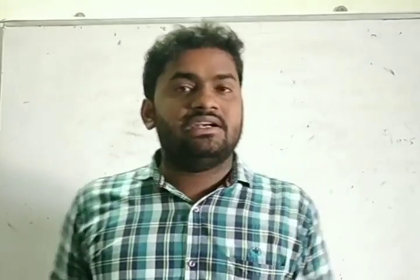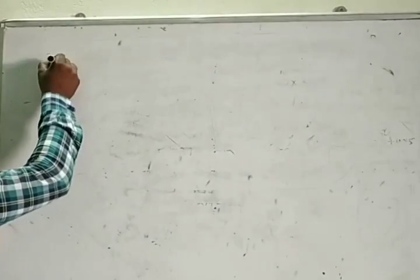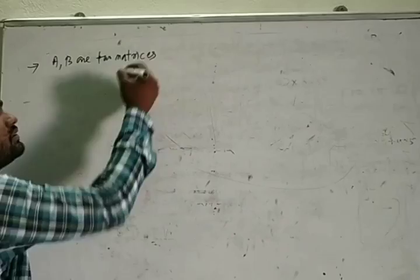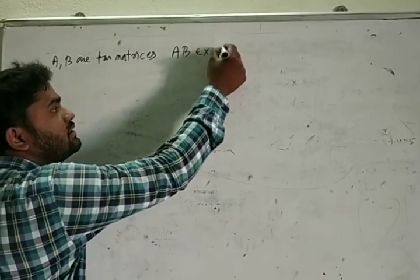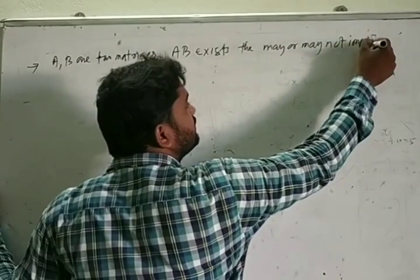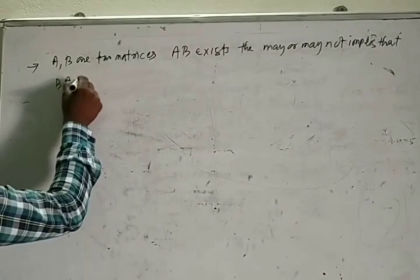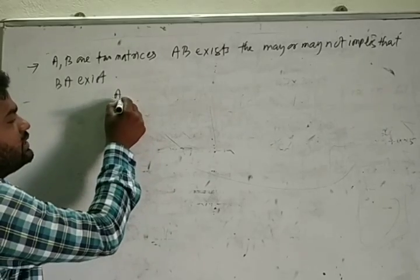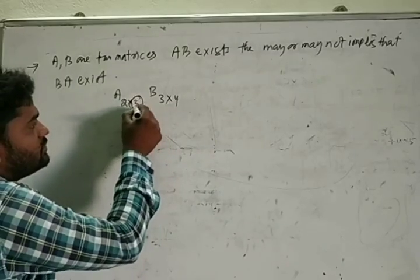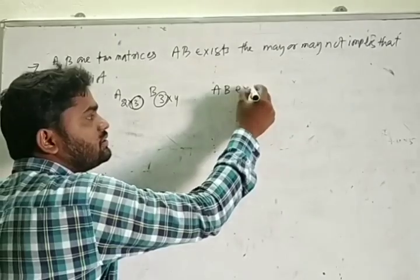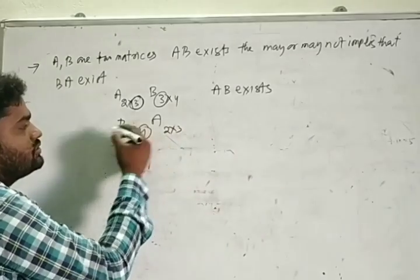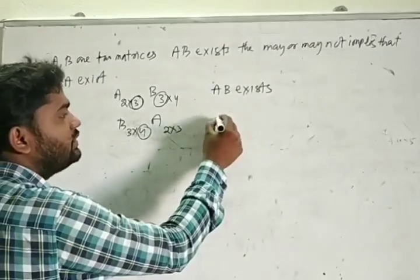Now we will discuss some properties of matrix multiplication. First, if AB exists, this may or may not imply that BA exists. For example, if A is a matrix of order 2×3 and B is a matrix of order 3×4, then AB exists since the number of columns of A equals the number of rows of B. But for BA, the number of columns of B is 4 and the number of rows of A is 2, so BA does not exist.